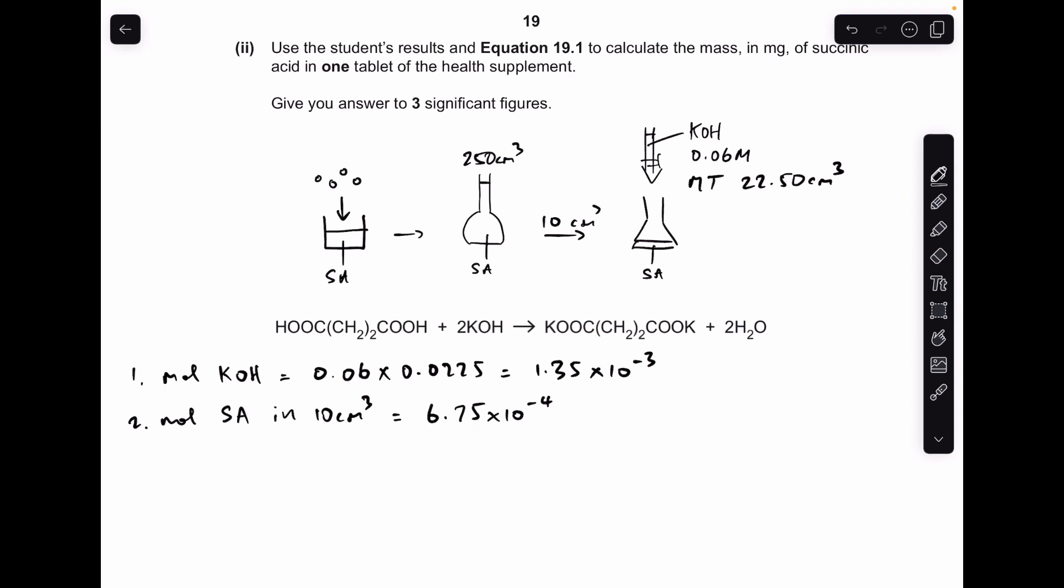So that's coming out at 6.75 times 10 to the minus 4, and then we need to scale up to how many moles were in the 250 cm cubed. So that's going to be 25 times this number here, which comes out at 1.6875 times 10 to the minus 2 moles. And then we've got to think about, well where did they come from? Where did this succinic acid come from? It came from here, which came from those four tablets.